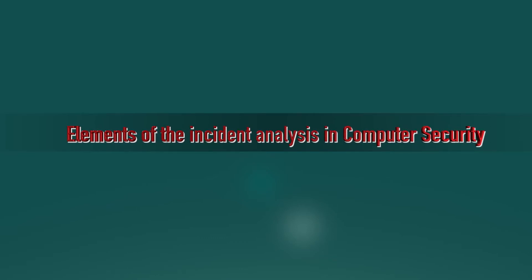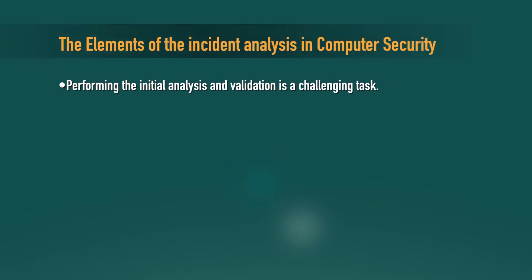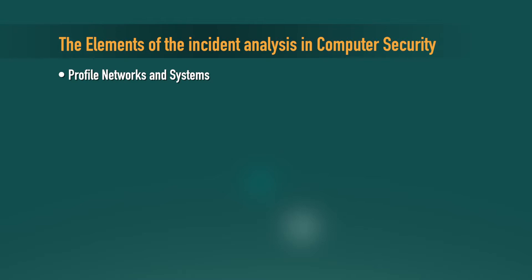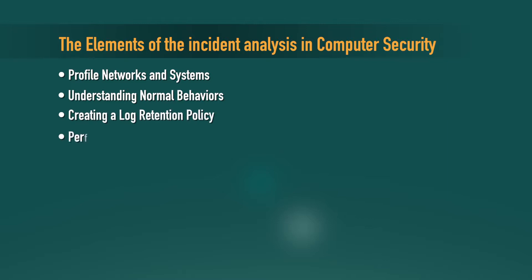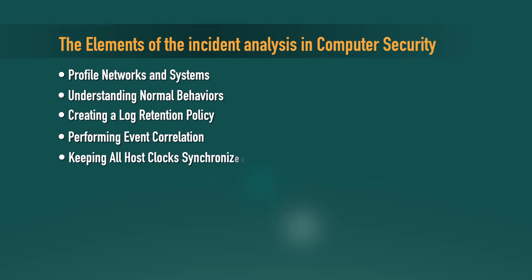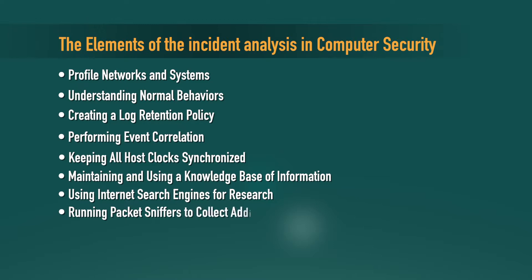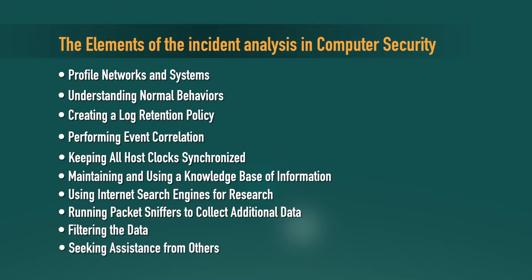Now let's focus on some of the elements of incident analysis in computer security. Performing the initial analysis and validation is a challenging task. The following elements are used for making the incident analysis easier and more effective: first, profile the networks and systems; second, understand normal behavior; third, create a log retention policy; fourth, perform event correlation; fifth, keep all host clocks synchronized; sixth, maintain and use a knowledge base of information; seventh, use internet search engines for research; eighth, run packet sniffers to collect additional data; ninth, filter the data; tenth, seek assistance from others.